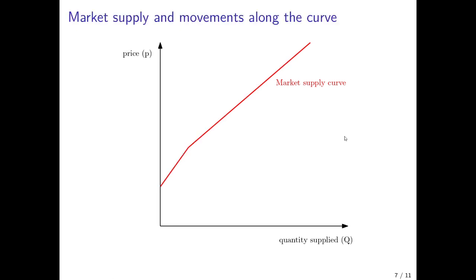Again, as before, we can have movements along the curve. So if we assume a certain price level P1, then output would be a Q1. Only the firm A would produce in this particular case. And if the price increases then to P2, we would get a quantity Q2 in the market. And firm B would also be operating.